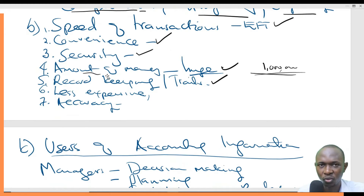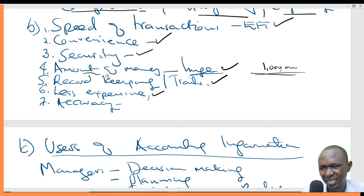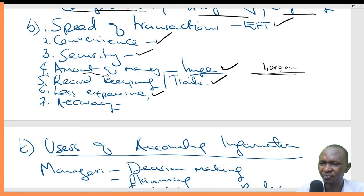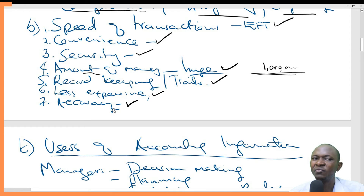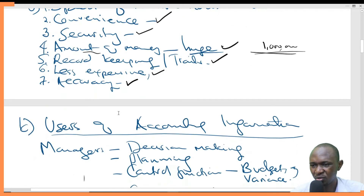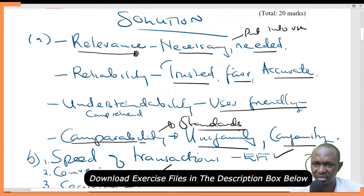Record keeping with EFT is perfect because the bank will have the statement and provide it to you. The bank statement is more reliable than any other record because banks do reconciliations every day, so the chances of inaccuracy are very low. It's also less expensive — you don't have to send somebody or waste fuel going to collect checks and doing messengerial duties. Accuracy is very high because you're dealing directly with the bank. Unlike a check where you might find out after 4 or 5 days, even 3 weeks, that it bounced because the date was written wrongly.